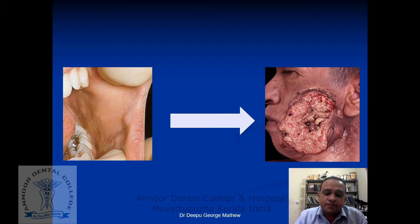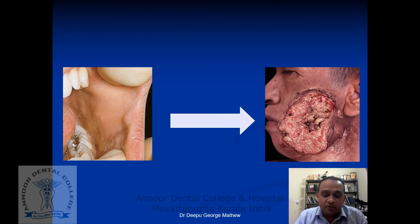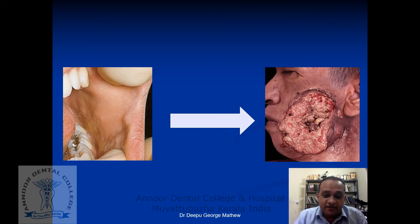Why is this so important for a dental surgeon? The oral cavity is an area where we usually work on, and most of the time we will be the first physicians who are going to encounter these patients. We are the people responsible for making the diagnosis, because only during a dental visit will there be an opportunity for a doctor to make a thorough examination of the oral mucosa, where you will be able to identify the starting point of these lesions.